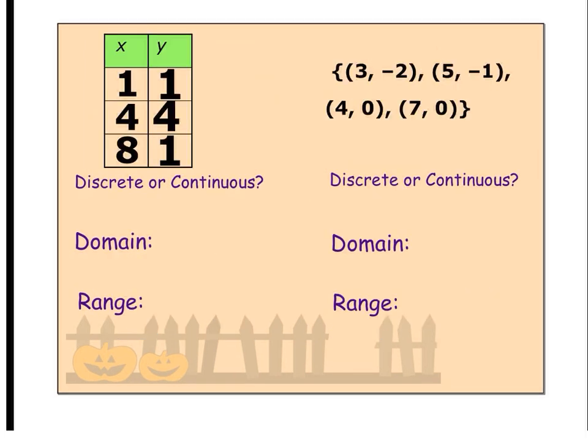Alright, last slide. So, again, if the table, I'm going to assume it's discrete because I'm given a limited number of exact points. Domain, x's. So, I'm going to list 1, 4, and 8 exactly what I see. Now, when I'm looking at my range or my y's, notice that my 1's repeat. We do not have to write something if it repeats. So, even though there's 2 1's listed, I'm only going to write 1 once in my range. I do not repeat it there.